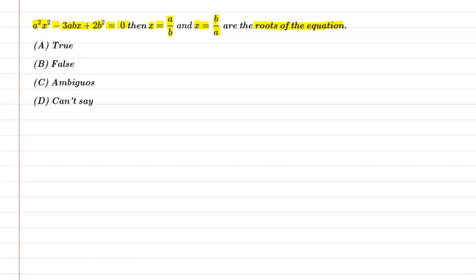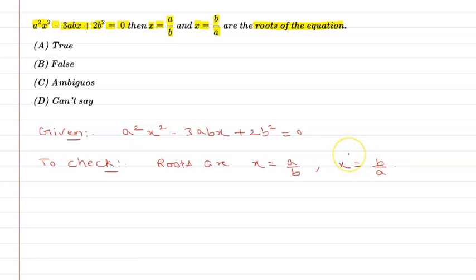Okay, so let's start. The equation given is a quadratic equation which is a²x² - 3abx + 2b² = 0. We have to check that roots are x = a/b and x = b/a. So we have the question given and we have to check the roots.